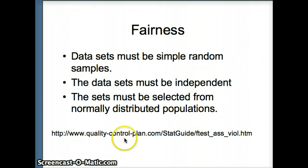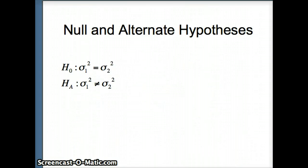And if you would like to see some more discussion on the fairness of the F-Test, you can check the link at the bottom of the slide. Here are some example null and alternate hypotheses that we can use for the F-Test. Variance 1 equals variance 2 versus variance 1 does not equal variance 2. This is a two-tailed test.